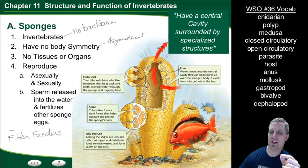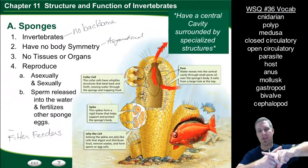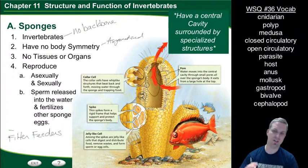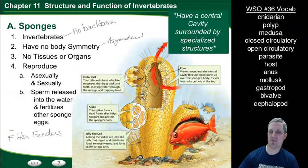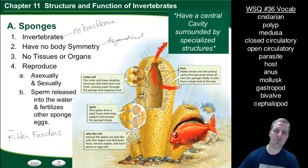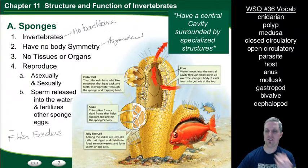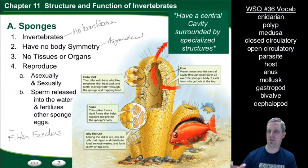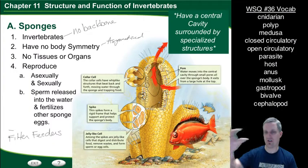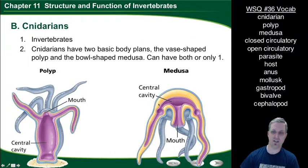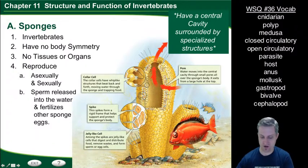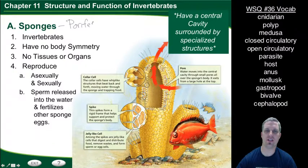Sponges also have structures inside their body called spikes, which are rigid and give support — almost like little skeletons that help protect the sponge's body. They also have jelly-like cells on the inside between the collar cells and the outer cells. These jelly-like cells are where digestion, distribution of food, waste removal, and production of eggs and sperm all occur.